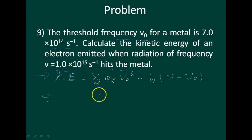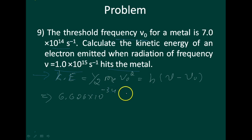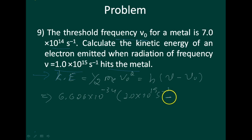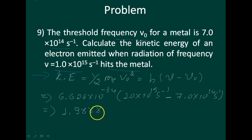Using Einstein's photoelectric equation: KE = h(v − v₀). The value of h is 6.626×10⁻³⁴ joule·second, v is 1.0×10¹⁵ per second, and v₀ is 7.0×10¹⁴ per second. After calculation, the kinetic energy obtained is 1.988×10⁻¹⁹ joule. That is the answer for this problem.